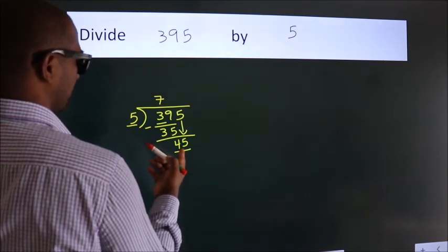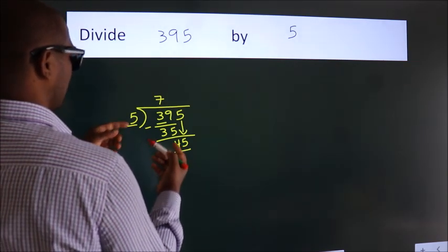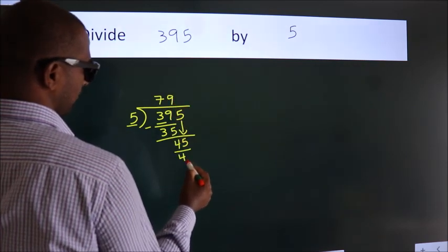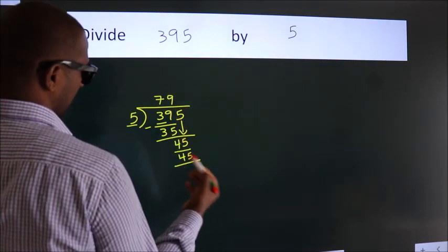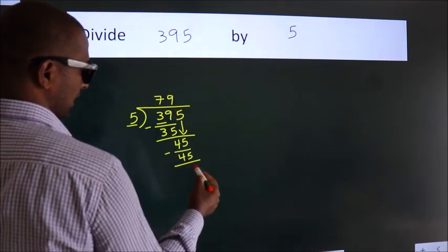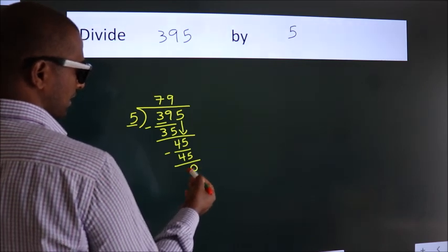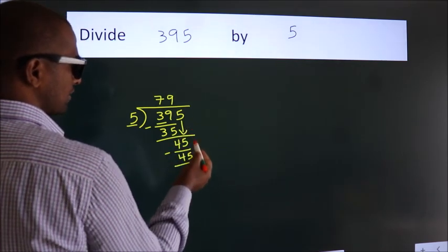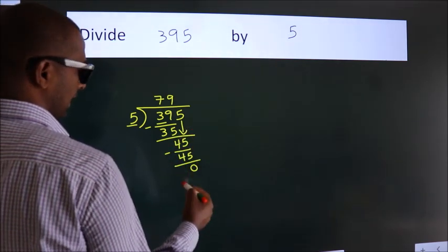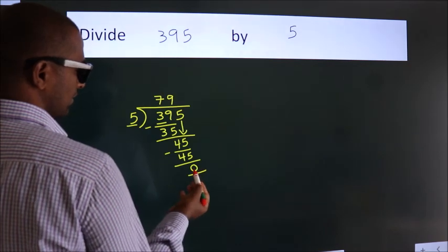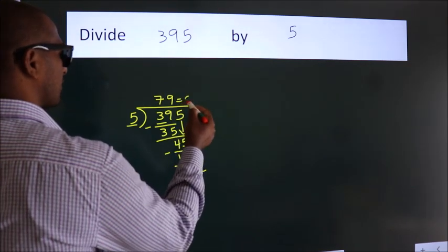When do we get 45 in the 5 table? 5 times 9 equals 45. Now we subtract, we get 0. After this, no more numbers to bring down and we got remainder 0, so this is our quotient.